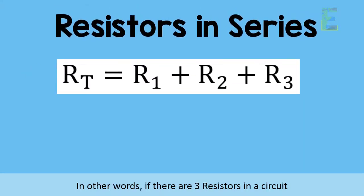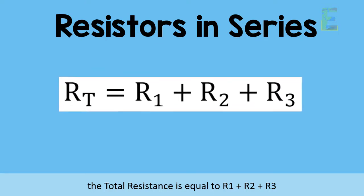In other words, if there are 3 resistors in a circuit, the total resistance is equal to R1 plus R2 plus R3.